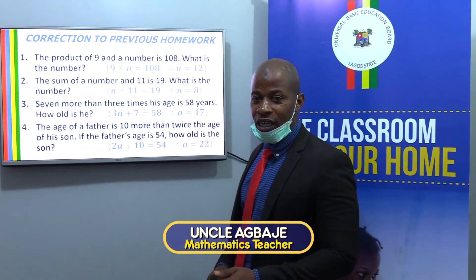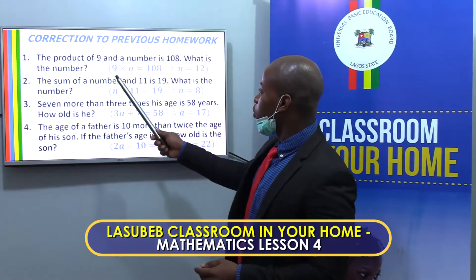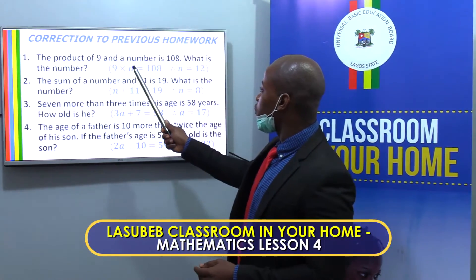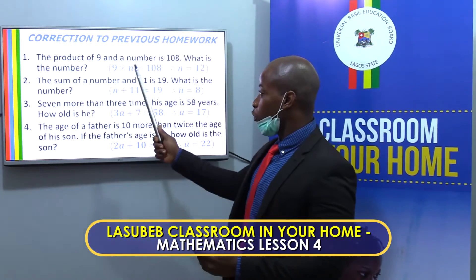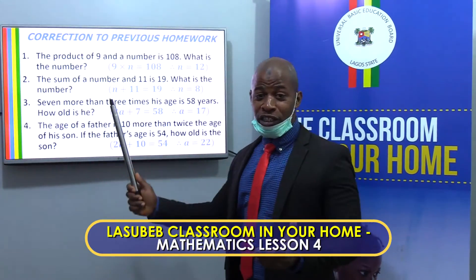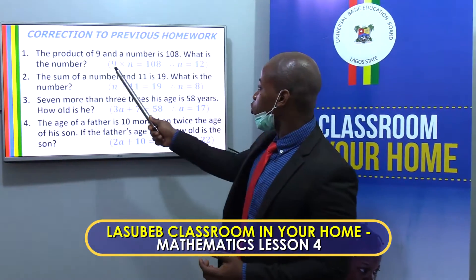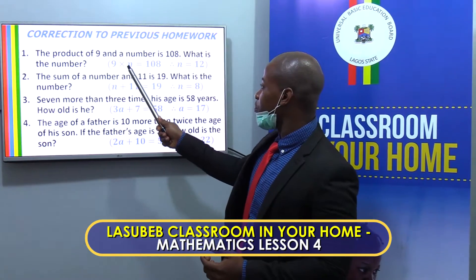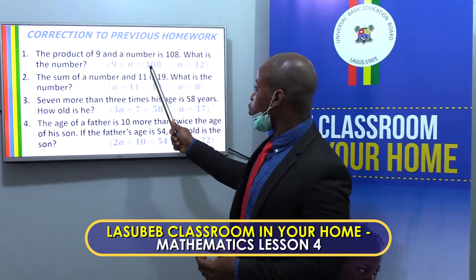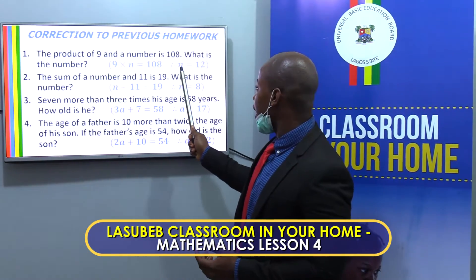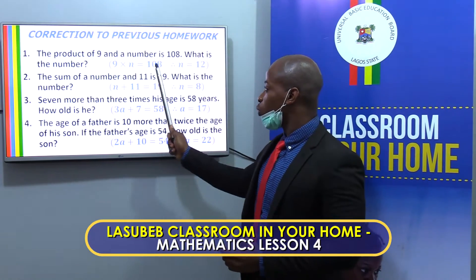But before that, the correction to your previous assignment. Number one says the product of 9 and the number is 108. You know that product means to multiply. So the equation we will use for this is 9 times n equals 108. In this case, n is 12 because 9 times 12 is 108.